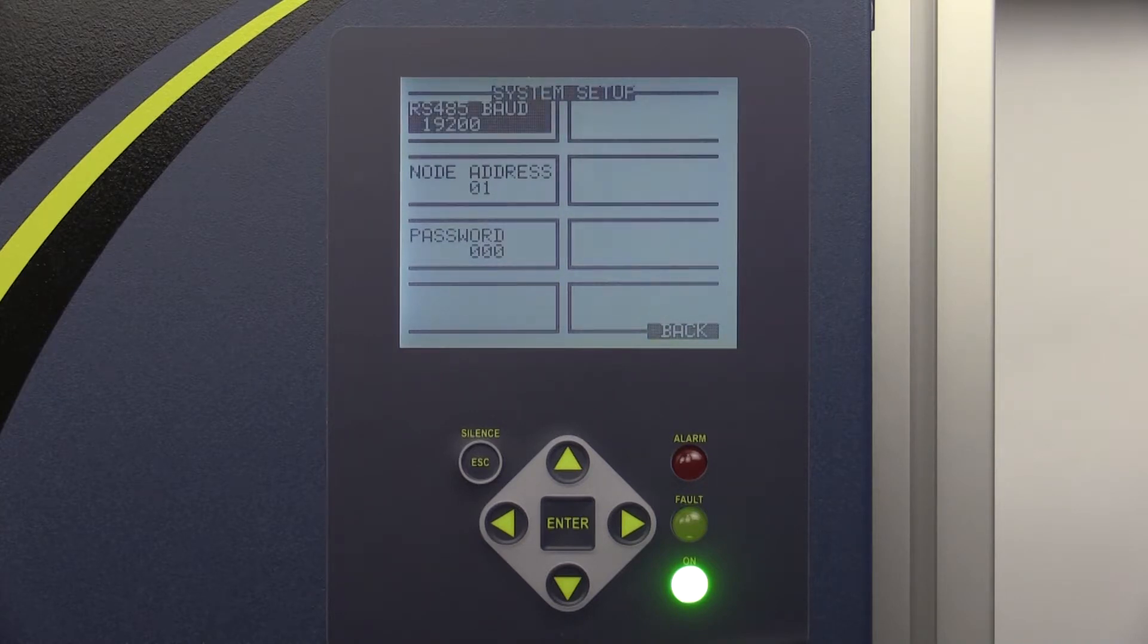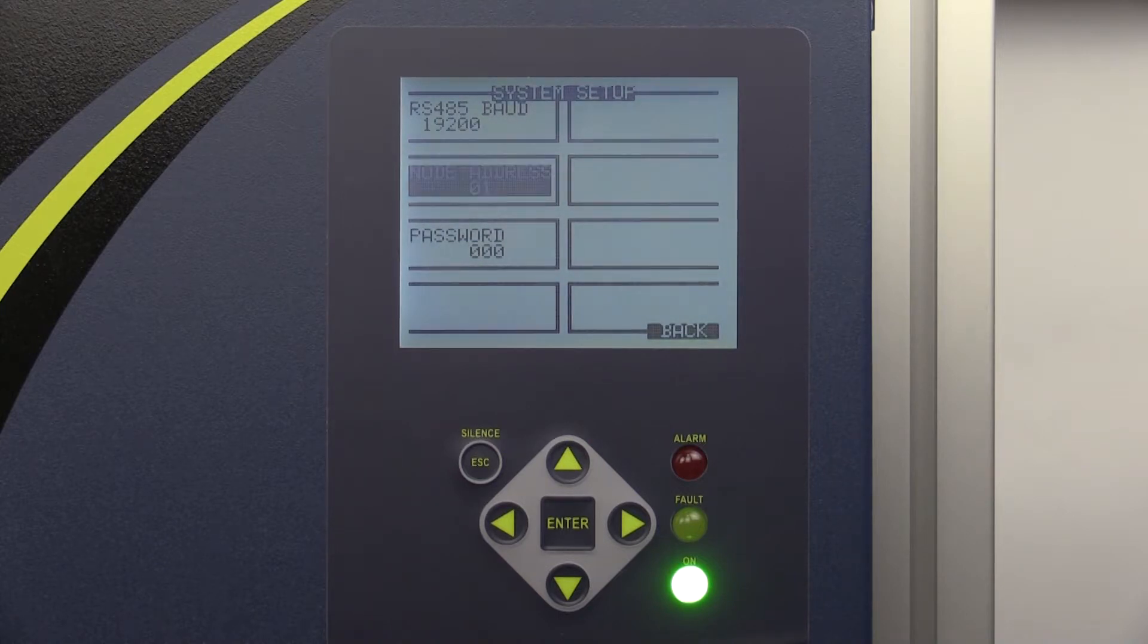The Baud Rate tab is used to set the baud rate for the RS-485 communication port. The default baud rate is 19,200, but there are several options to choose from. The Node Address tab allows you to set the distinctive node address of that specific monitor. Each monitor on the network must have a distinctive node address, which is set from 1 to 64.